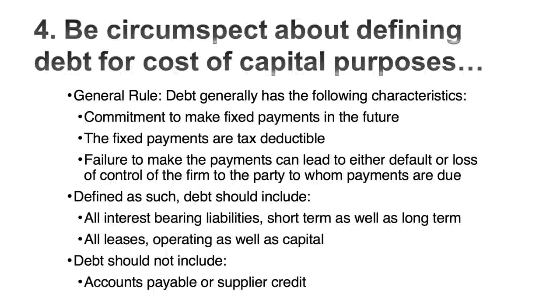The last step is deciding what debt to subtract to get to equity value. Subtract all interest-bearing debt and lease commitments — the same items treated as debt in the cost of capital calculation. This is also your last chance to mop up anything else that might concern you. For example, if you're valuing a tobacco company that faces lawsuit risk, you must take the expected value of those lawsuit losses and subtract them from equity value. Not easy to do, but there's no way around it.